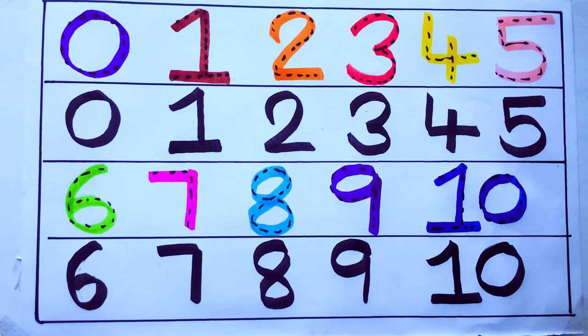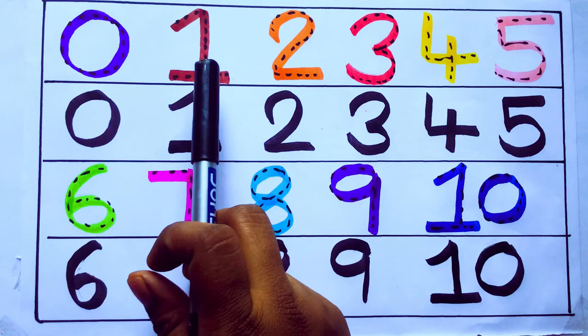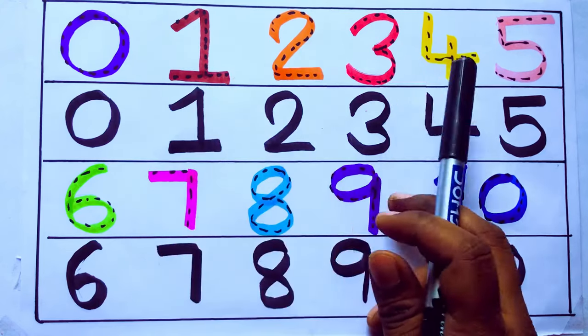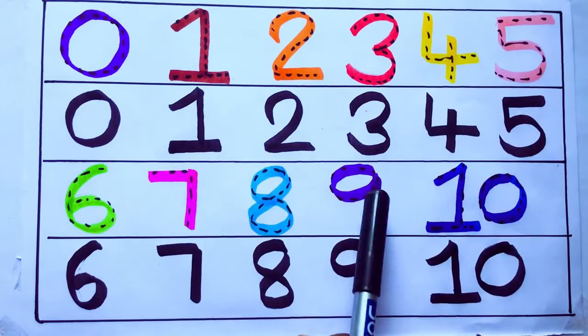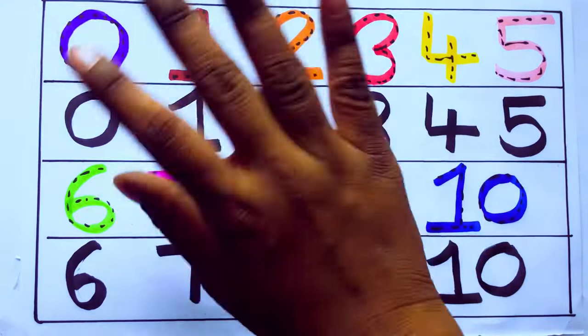Once again, learning numbers: 0, 1, 2, 3, 4, 5, 6, 7, 8, 9, 10. Okay, bye kids.